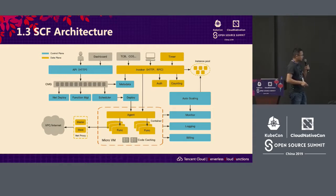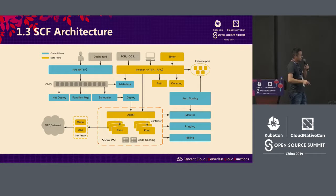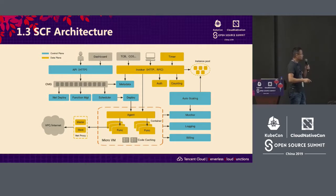In terms of optimizing cold start, we have several directions. One is the VM with a lightweight virtualized system. The function must be coupled with the public network and the cloud, which impacts cold start. In terms of scalability, we scale the function when there is a cold start or a concurrent function call. We must think about how to control and optimize the cost of the function platform.